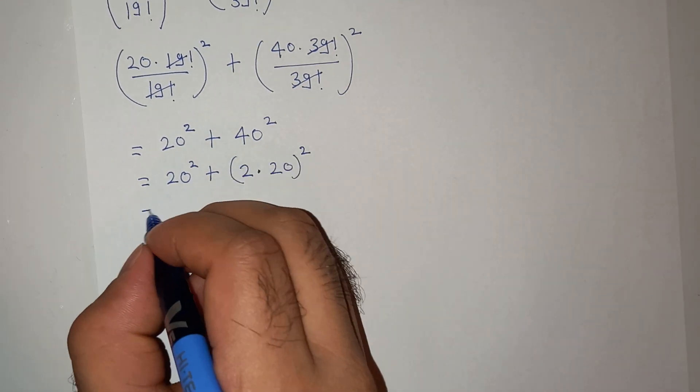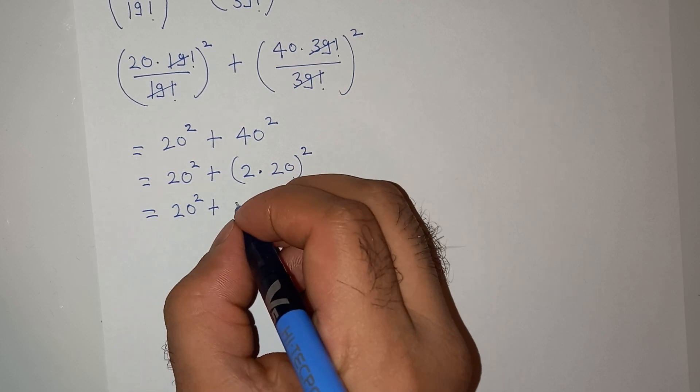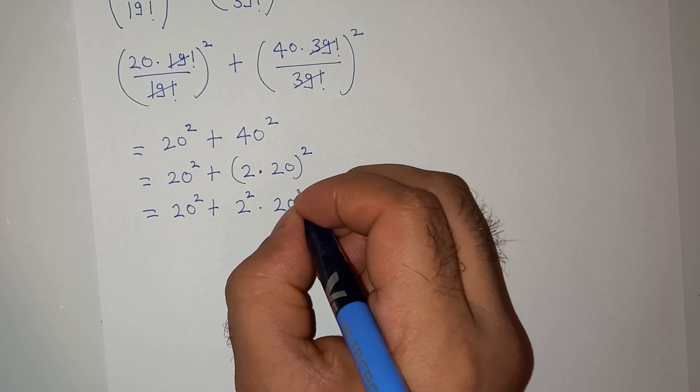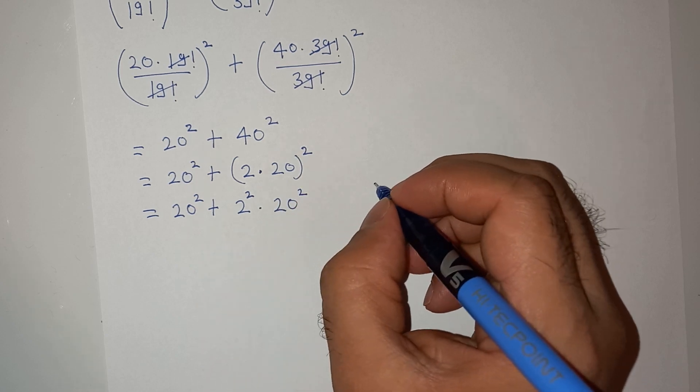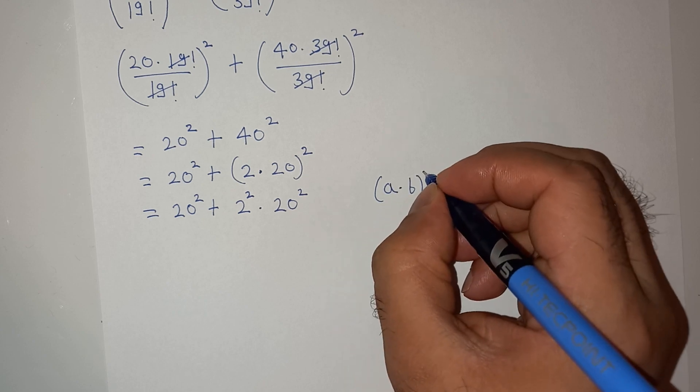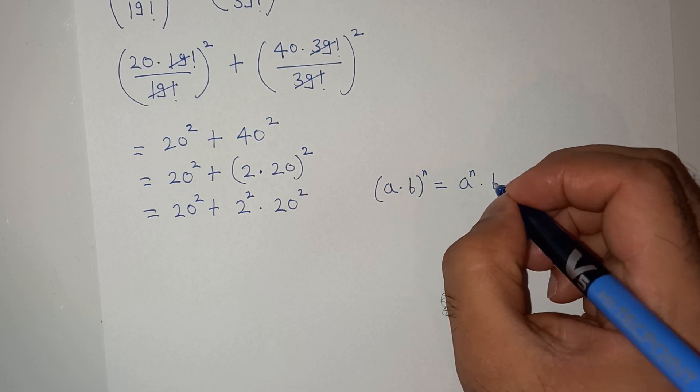So this will be 20 square. Now let's open the bracket, so this will be 2 square multiplied by 20 square, as per the formula we have: a multiplied by b power n equals a power n multiplied by b power n. So this is the exponential rule.